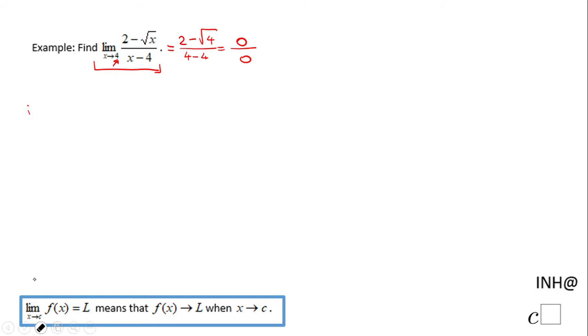The way I do it is: limit when x approaches 4 of (2 - √x)/(x - 4). You want to get rid of that 2 - √x. How we're going to do that? We're going to multiply by (2 + √x)/(2 + √x). You notice this expression here is nothing else than the number 1. That's the reason we can multiply by it and keep the equal sign.